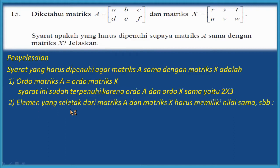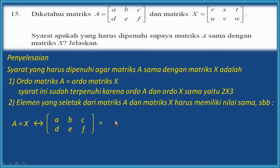2. Elemen-elemen yang seletak dari matriks A dan matriks X harus memiliki nilai sama. Sebagai berikut: matriks A sama dengan matriks X. Perhatikan, matriks A-nya yaitu A, B, C, D, E, F sama dengan matriks X-nya R, S, T, U, V, W. Elemen-elemen yang seletak dari matriks A dan X harus sama.